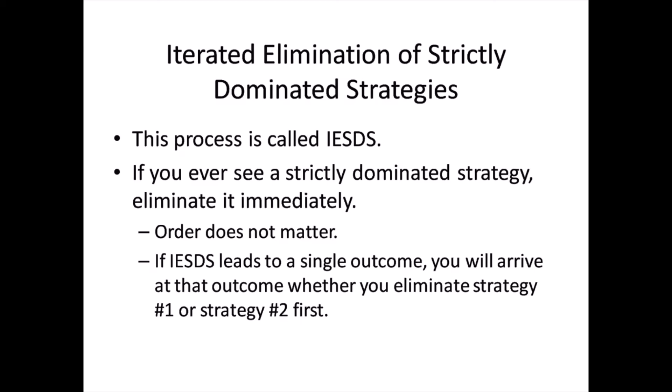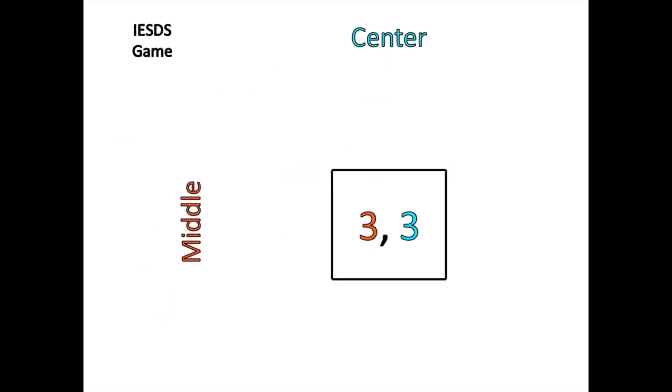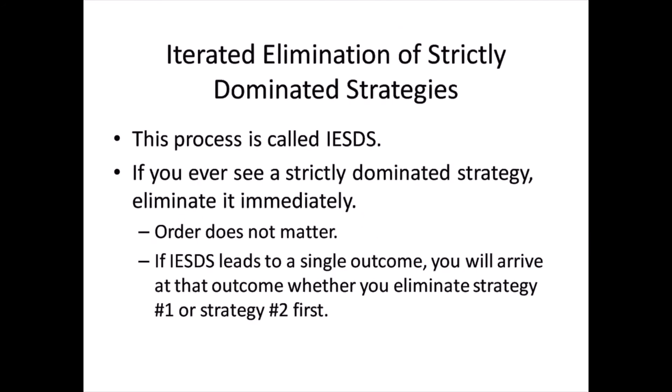Going forward, if you ever see a strictly dominated strategy, you should eliminate it immediately. Whether it's a simple 2x2 game, a 3x3 game, or even a 6x6 game — if you see a strictly dominated strategy, eliminate it immediately. A quick note: you might be in a situation where multiple strategies are strictly dominated at the same time, and as it turns out, the order doesn't matter. If you eliminate either strategy, the other one will be strictly dominated afterward. So if IESDS leads you to a single outcome — like middle-center in this game — it really doesn't matter which dominated strategy you eliminate first; you'll still arrive at that one single outcome. That's why IESDS is really useful.